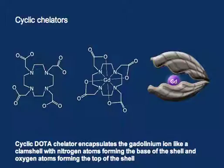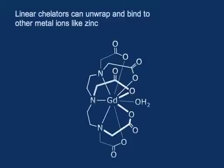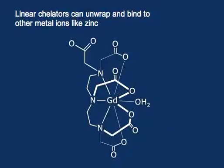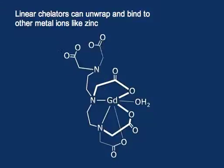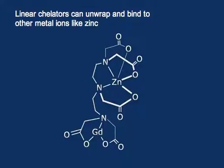So why is one better than the other? With linear chelators, you can unwrap them one bond at a time — break one bond, then another, which opens up a site where something like zinc can bind. The zinc keeps wrapping on while the gadolinium unwraps. It's like two dance partners where the zinc twirls the DTPA off the gadolinium and the gadolinium is released — peeling away like taking a snake off an egg.